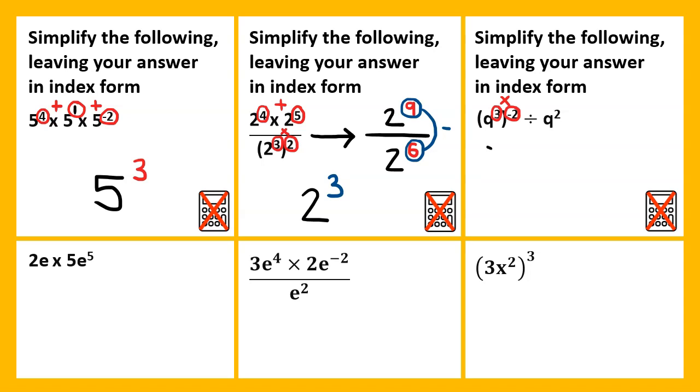For the first part here, we have a base of Q, and then 3 times negative 2 is negative 6. This is being divided by Q to the power of 2. Now we can simplify by subtracting the indices. We have a base of Q, and we're doing negative 6 and we're subtracting 2, so Q to the power of negative 8.